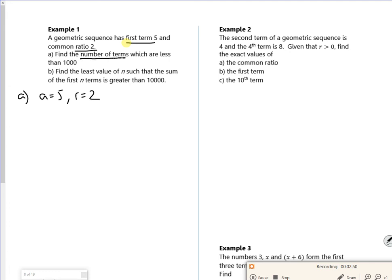But this says find the number of terms which are less than a thousand. So we've got to find where the thousandth term would be, or just underneath it. So I'm looking where a r to the n minus 1 is less than a thousand.